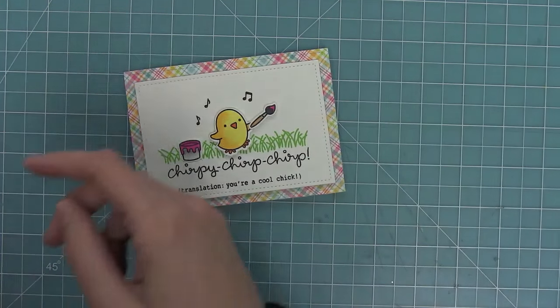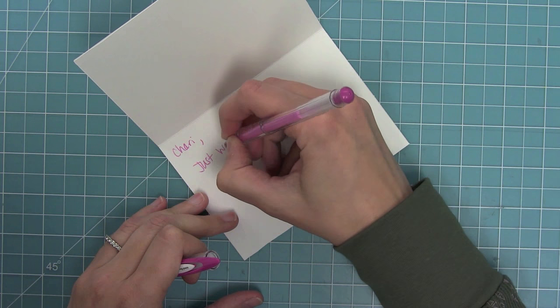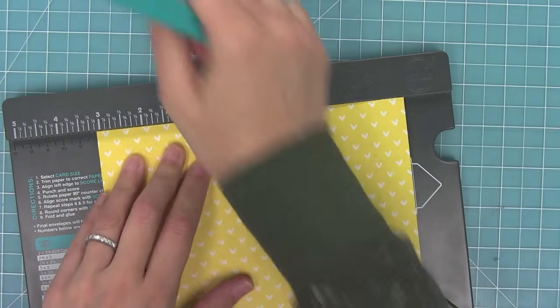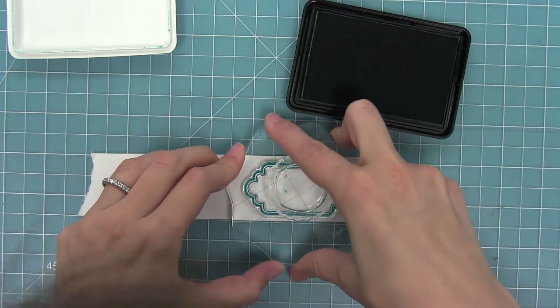So here I have a card that I stamped the back of earlier, and I'm going to write it out to my friend Shari and create a coordinating envelope with some Let's Poke in the Meadow paper here, and my envelope punch board. I just love that thing.